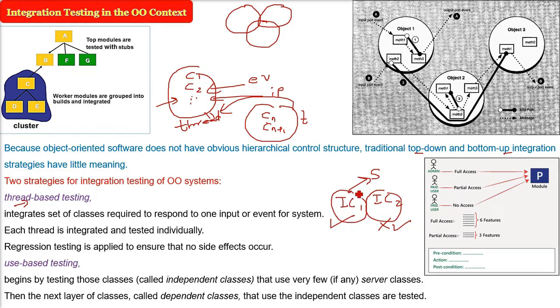We will test first the independent classes that are not having that much relationship with the server classes. Then we will come to the next layer, the dependent classes, because these dependent classes will be related or dependent on the server class. First we check the independent, then the dependent class. This is use-based testing.